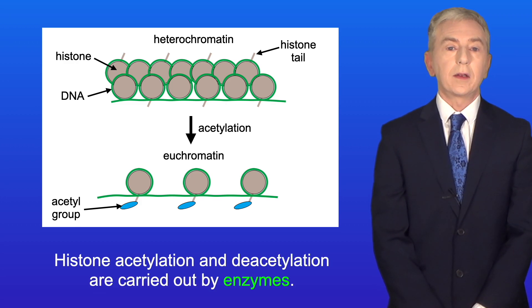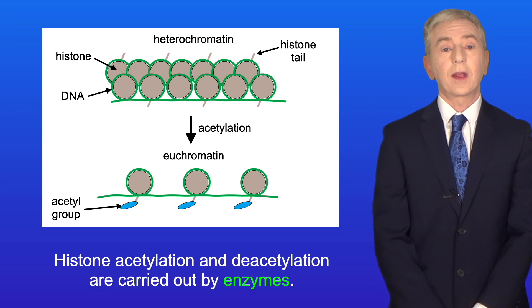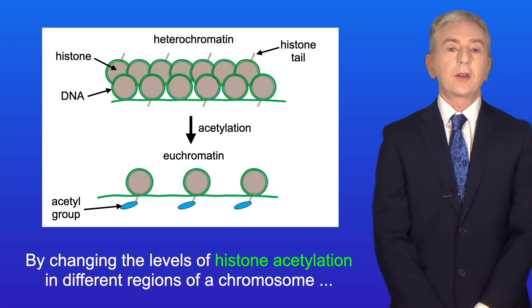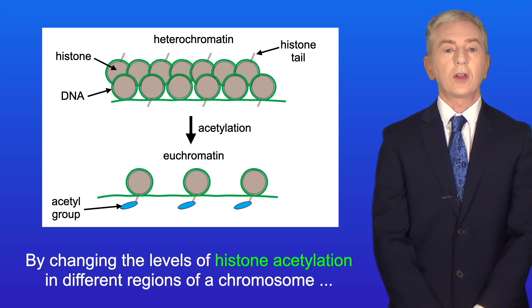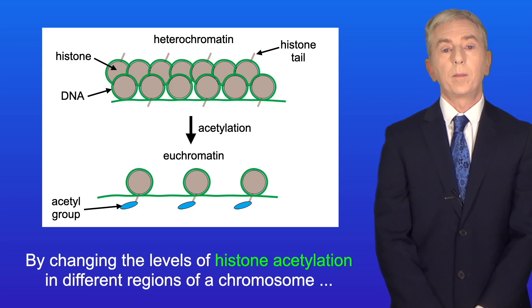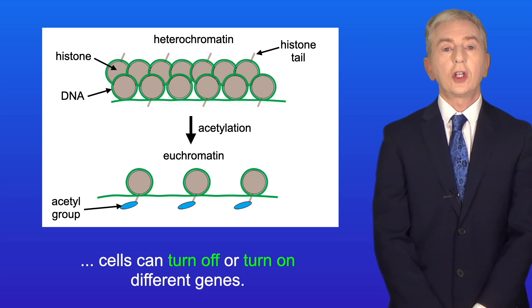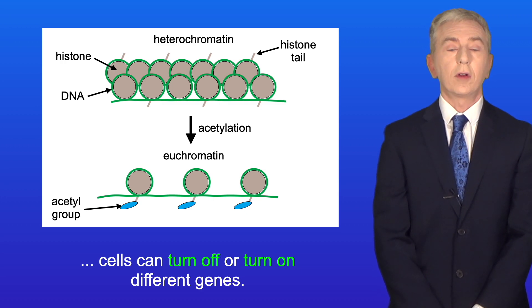Histone acetylation and deacetylation are carried out by enzymes, and by changing the levels of histone acetylation in different regions of a chromosome, cells can turn off or turn on different genes.